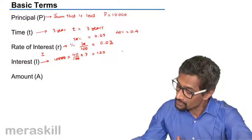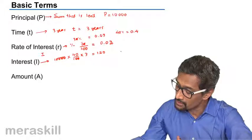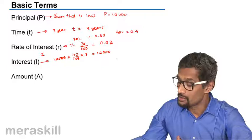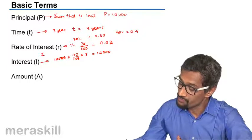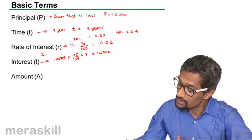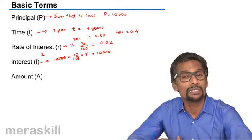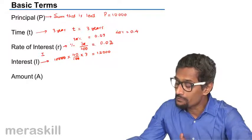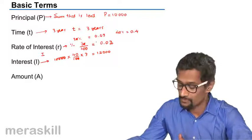10,000 into 40% is going to be 12,000 is what he is going to pay accordingly. 12,000 will be the interest in case he has to pay it. So the amount of interest and the rate of interest are two different things.